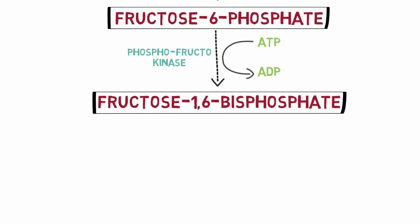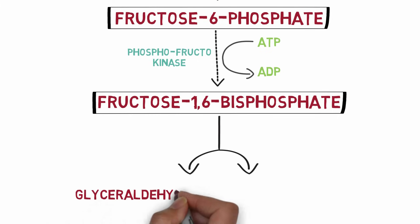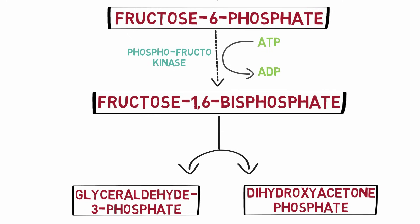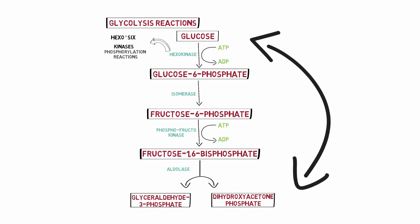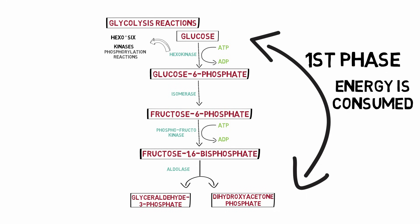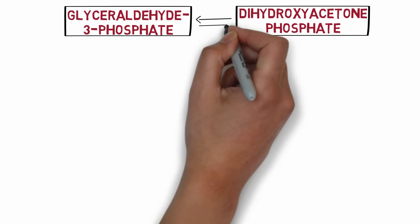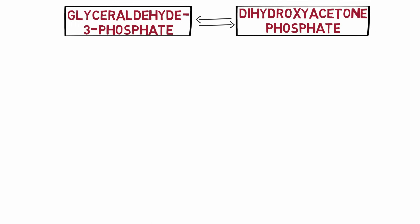Next, fructose 1,6-bisphosphate is split into two molecules: glyceraldehyde 3-phosphate and dihydroxyacetone phosphate, both three-carbon compounds. The enzyme catalyzing this reaction is called aldolase. These reactions compose the first phase of glycolysis, and as you can see, energy is actually utilized in this phase in the form of two ATPs.